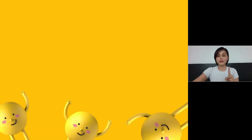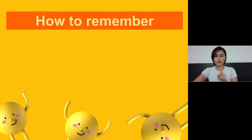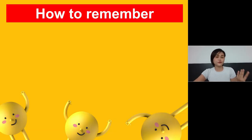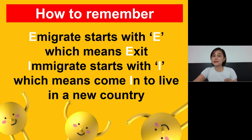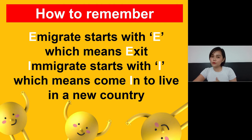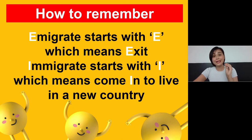But I'll give you another tip. How do you actually recall the difference? Here's an easier one you can remember. Emigrate starts with the letter E, which reminds you it means exit — you want to leave your own country permanently to go live in another one. And immigrate starts with the letter I, which means come in to live in a new country.